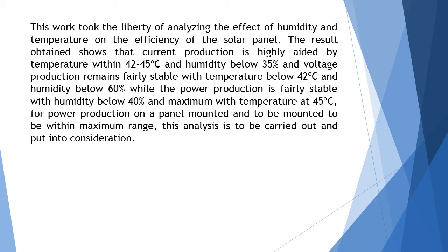The results obtained show that current production is highly aided by temperature within 42 to 45 degrees Celsius and humidity below 35%. Voltage production remains fairly stable with temperature below 42 degrees Celsius and humidity below 60%, while power production is fairly stable with humidity below 40% and maximum with temperature at 45 degrees Celsius. For power production on a mounted panel to be within maximum range, this analysis is to be carried out and put into consideration.